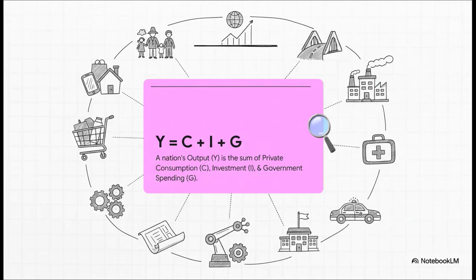On one side, you have Y — that's everything a country produces, its total output, or GDP. And on the other side, you have the only three places that money can possibly go. C is for consumption — that's people like us buying things. I is for investment — that's businesses building new factories or developing new tech. And G is for government spending: roads, schools, defense. Every single slice of the economic pie is accounted for.